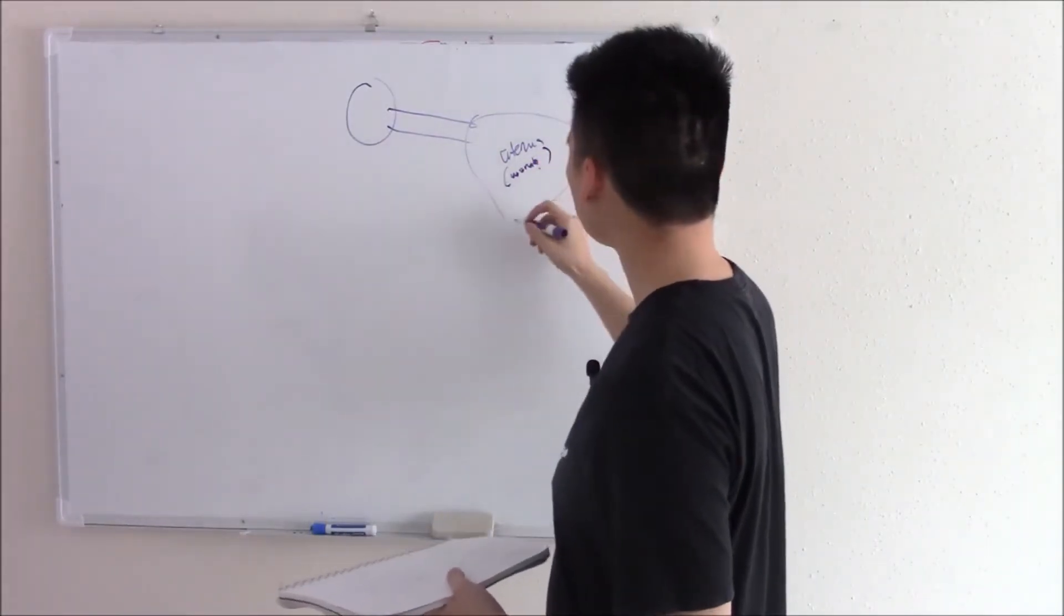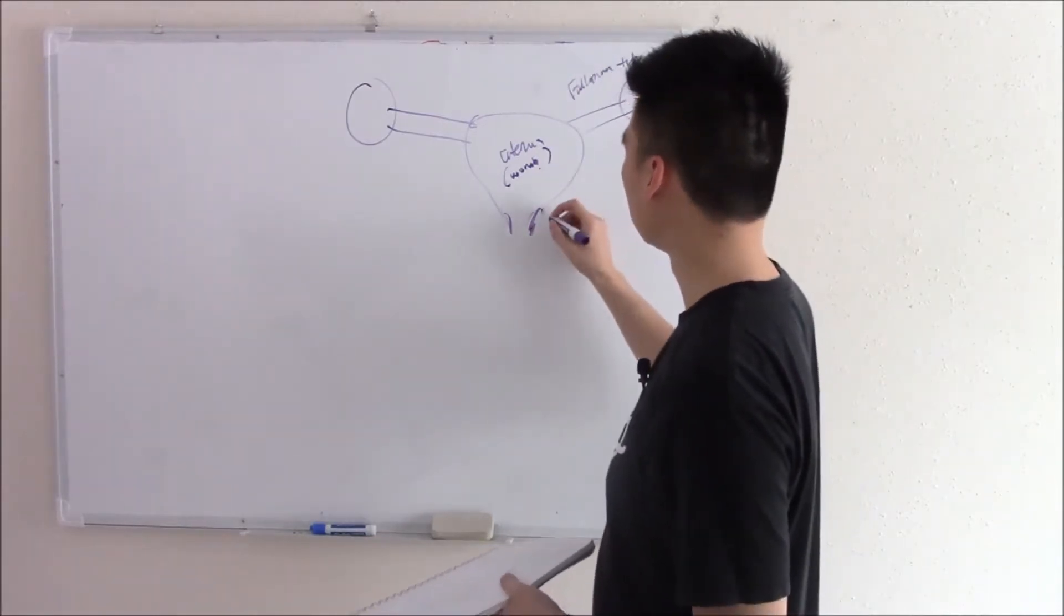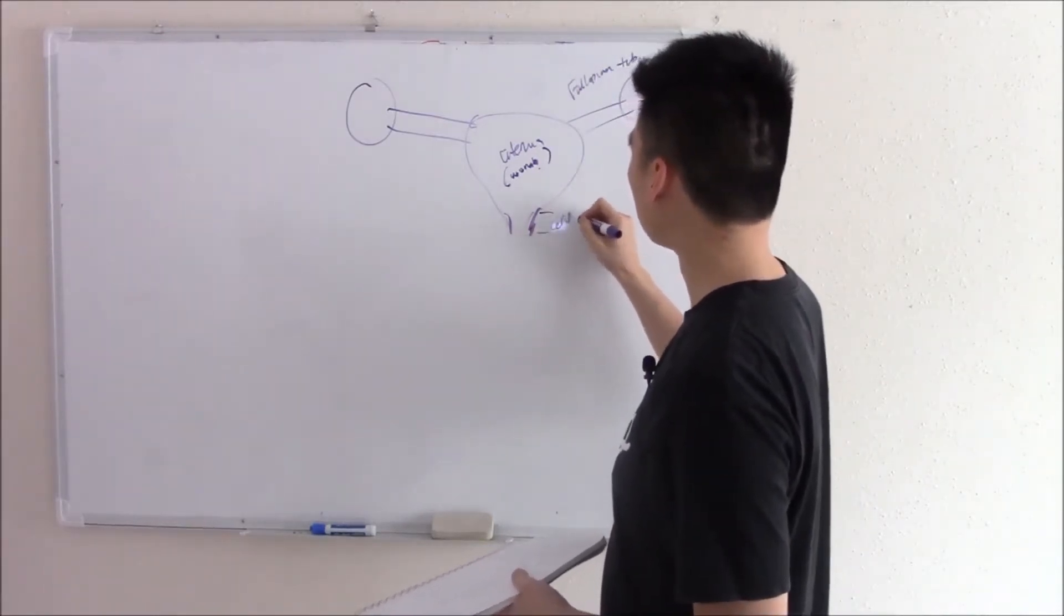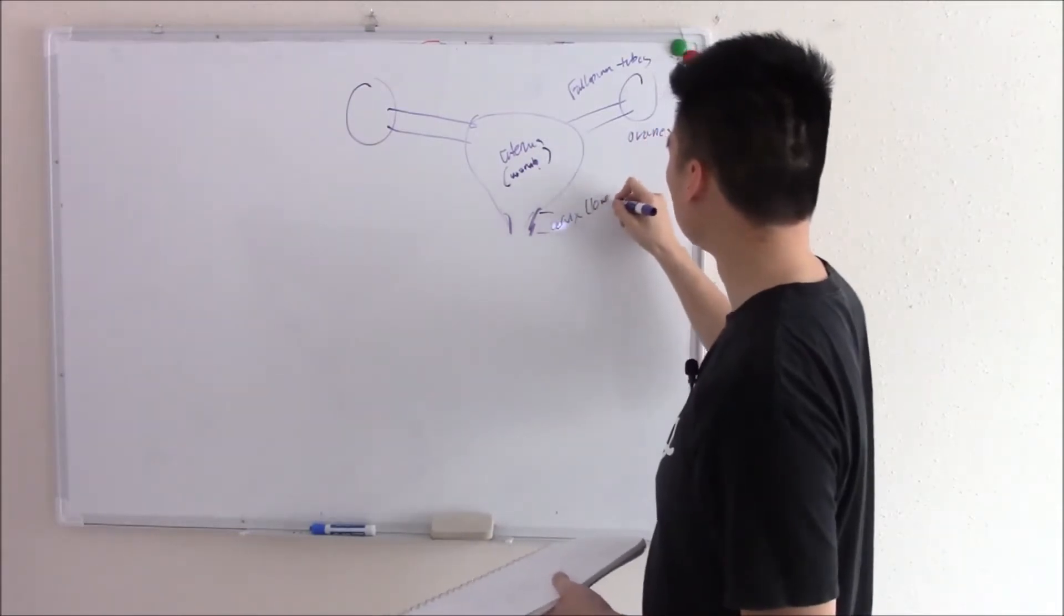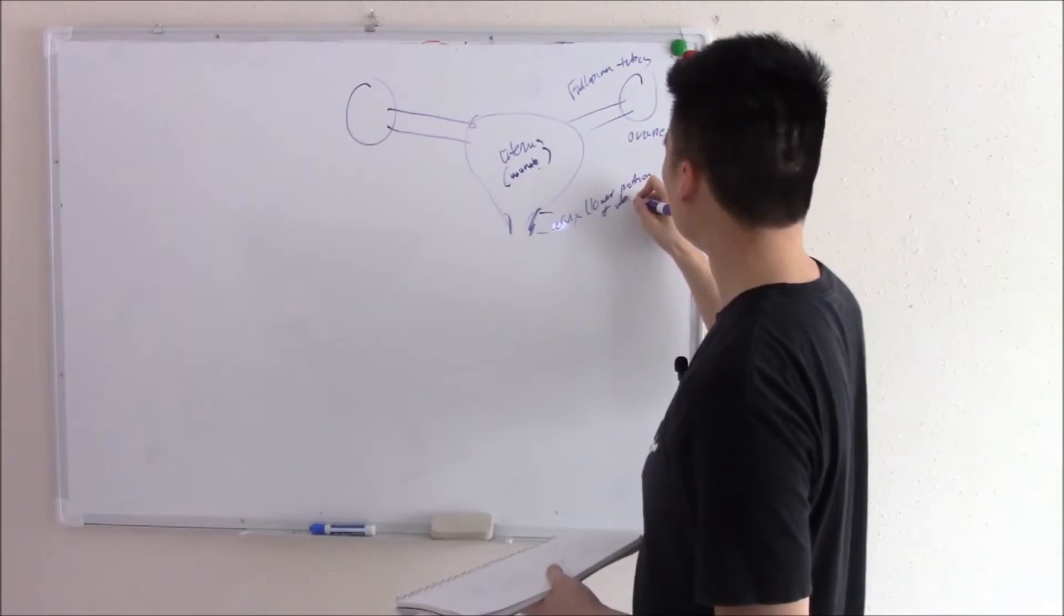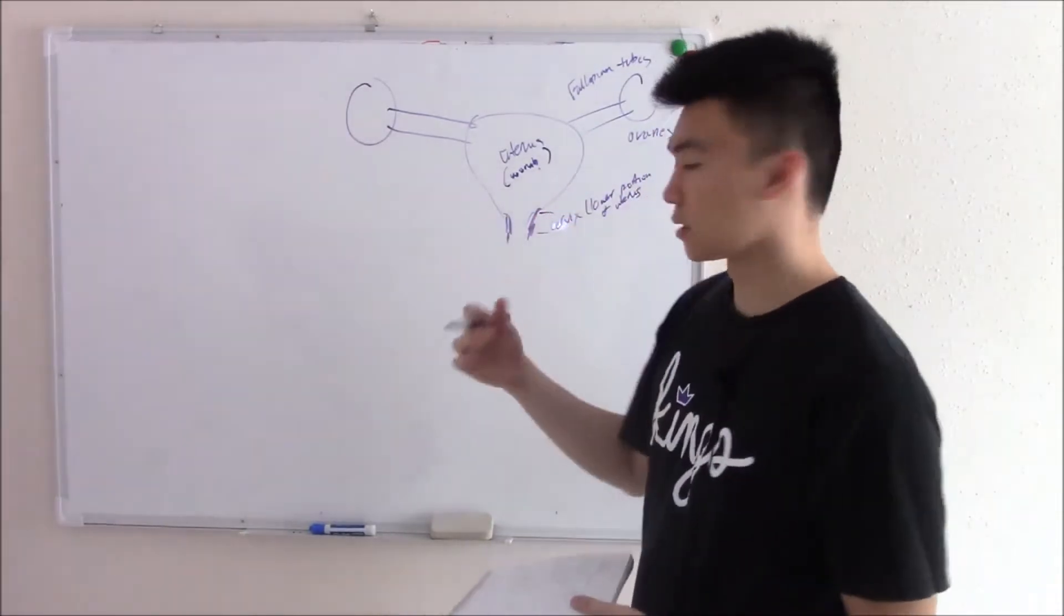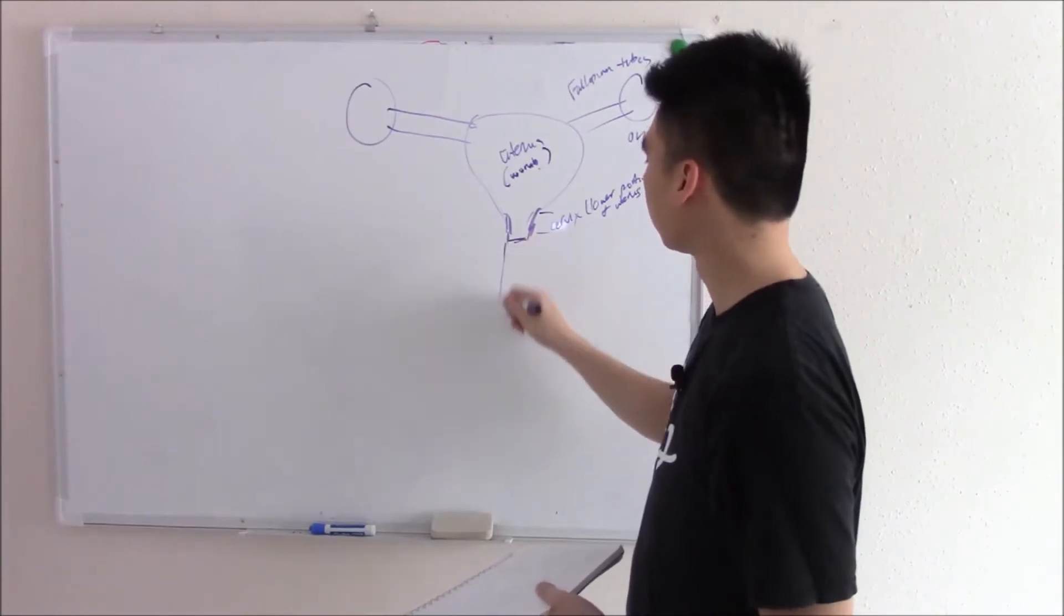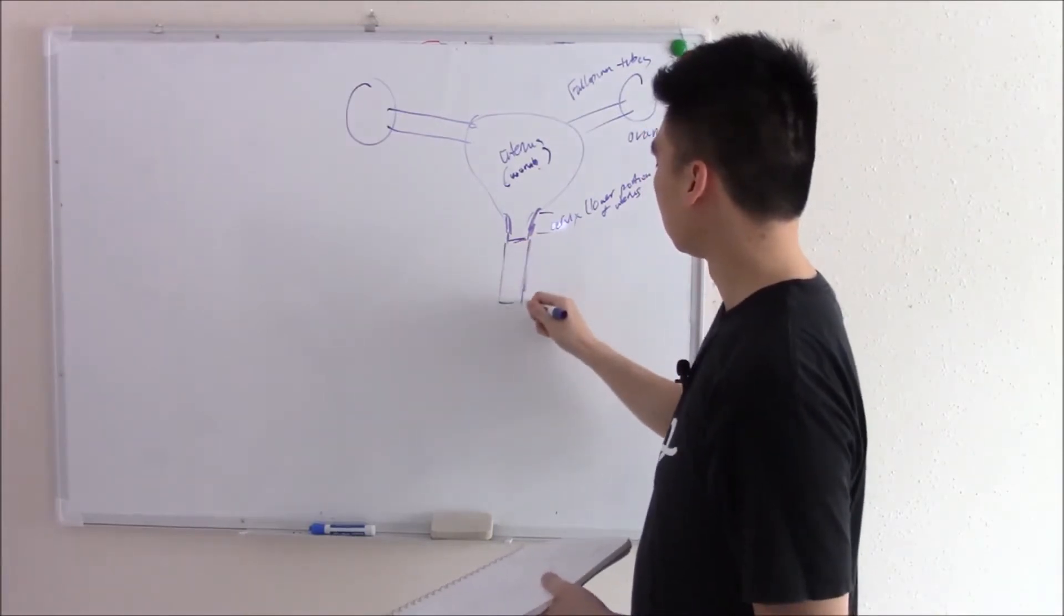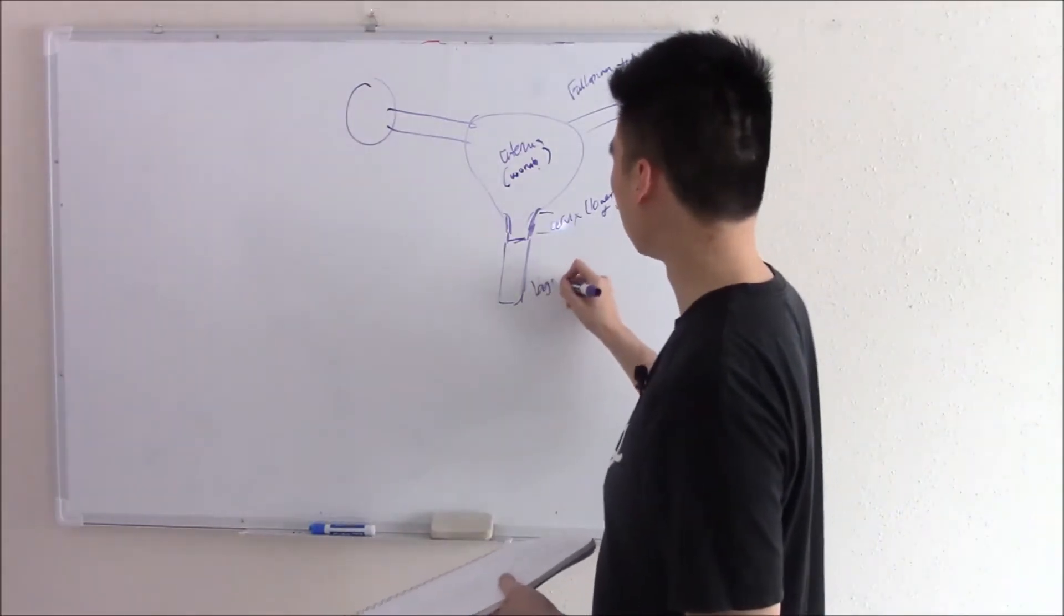I just say womb. At the lower part of your uterus you have something called your cervix. This is basically the lower portion of your uterus and this lower portion of the cervix connects to the vault leading to the outside world. That is your vagina.